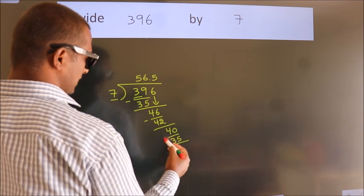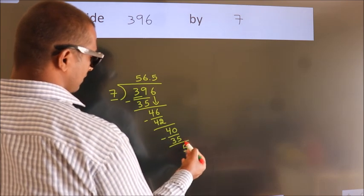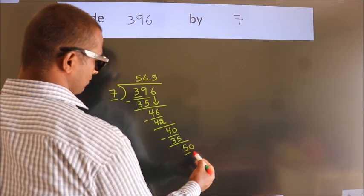Now we subtract. We get 5. After this, we already have the decimal, so directly take 0. So 50.